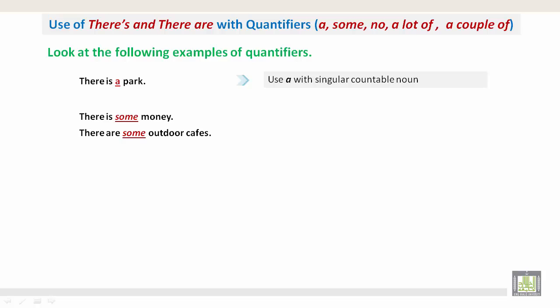There is some money. There are some outdoor cafes. Use some with uncountable singular nouns and countable plural nouns. Don't use in negative sentences.